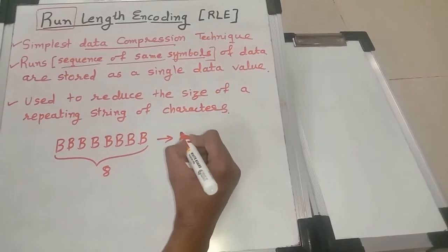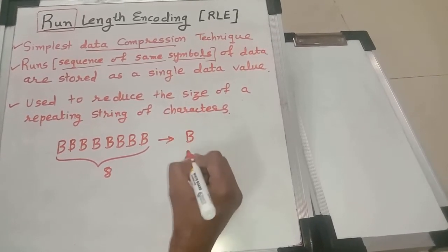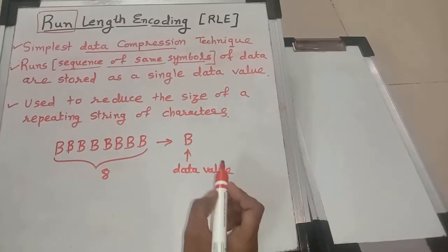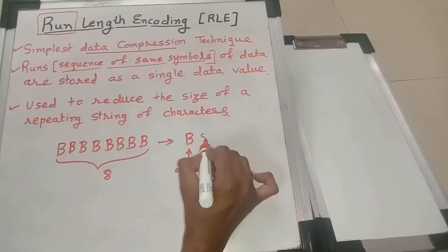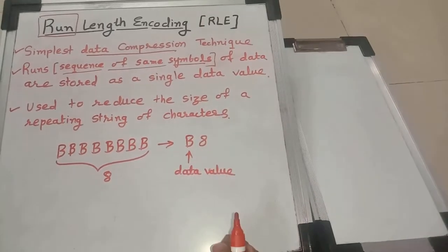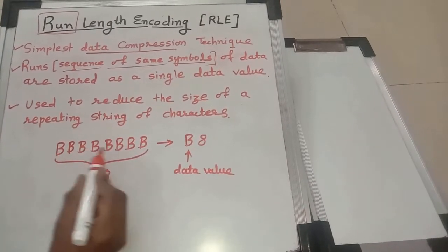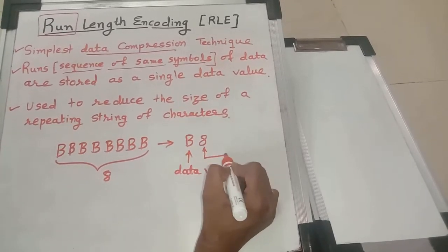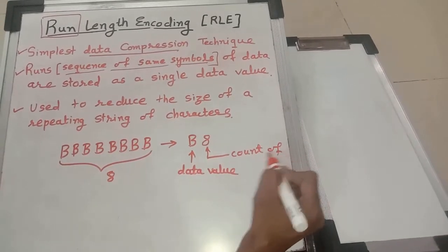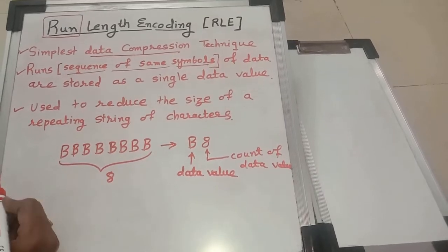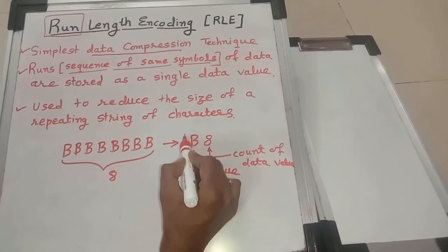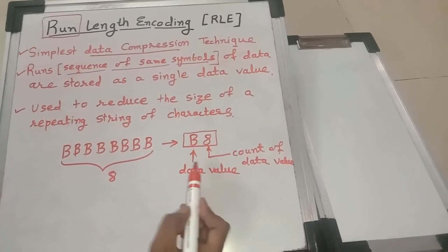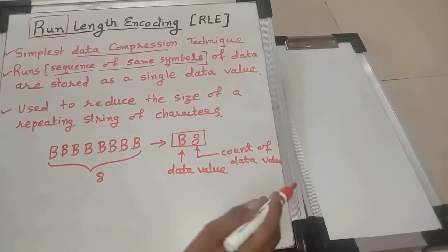Instead of sending these symbols as is, we can send the data value B and how many times it is repeated - 8 times. So instead of sending B 8 times, we can send the data value and count of data value. We are compressing the data by sending B8.